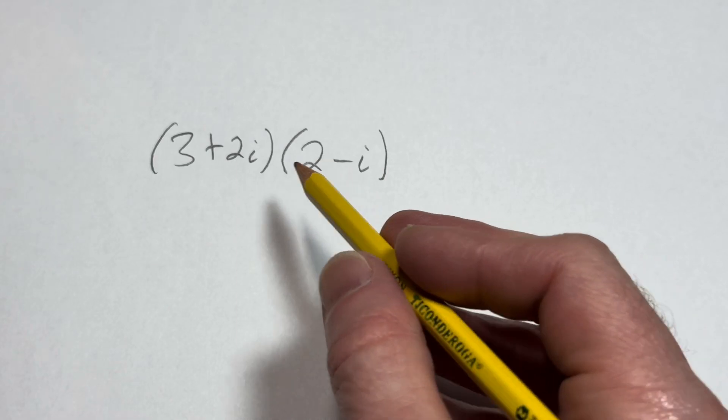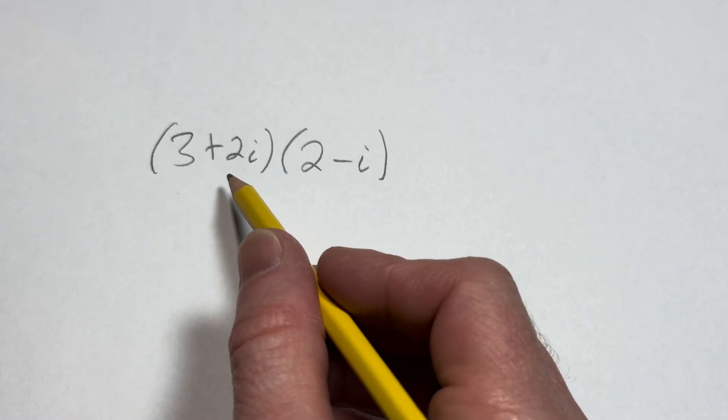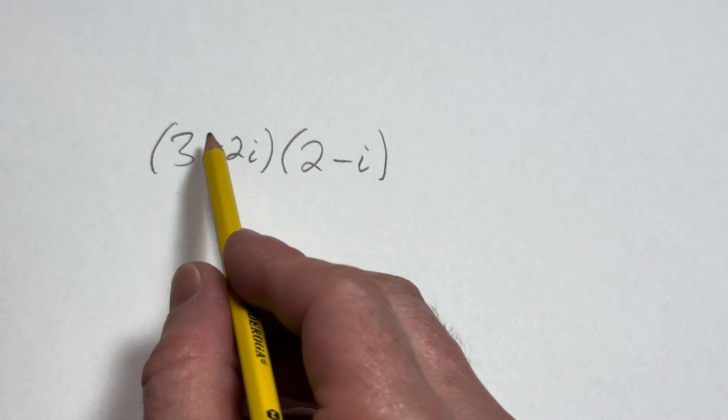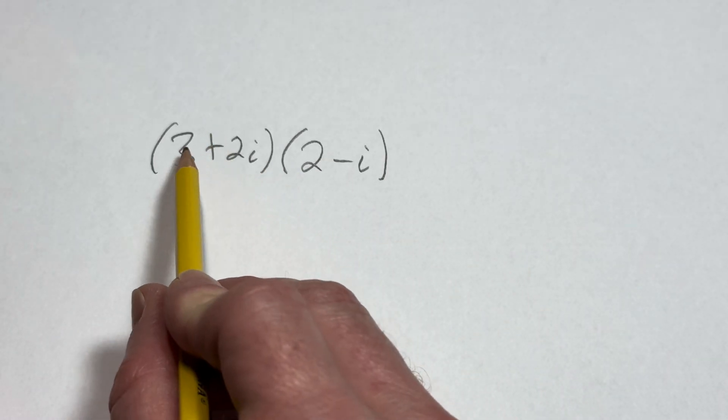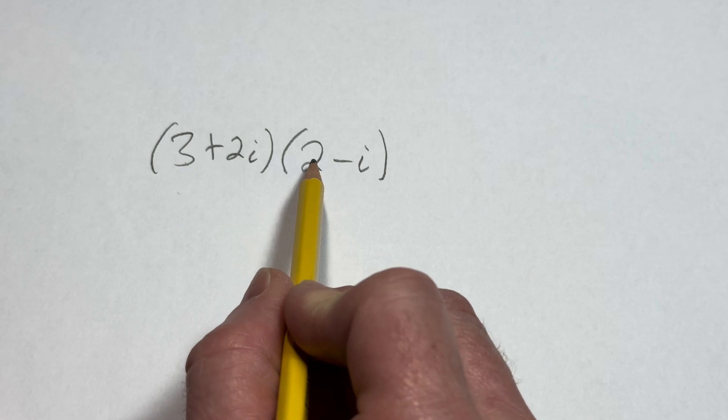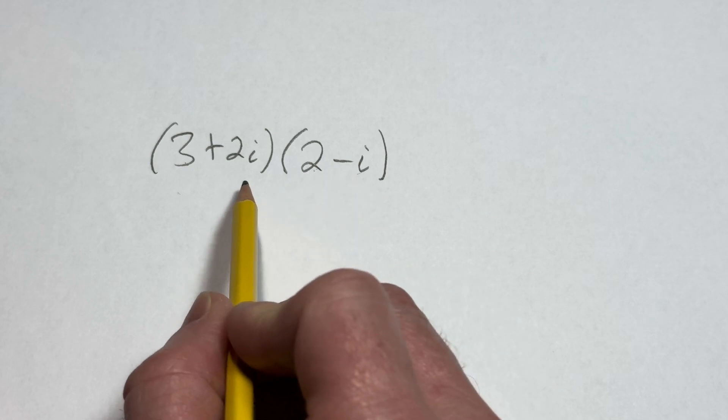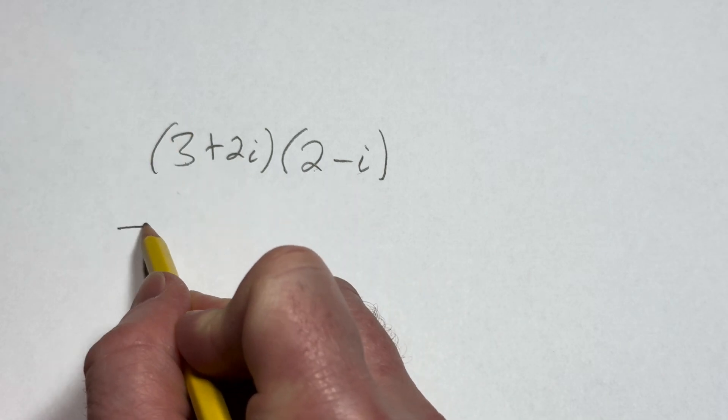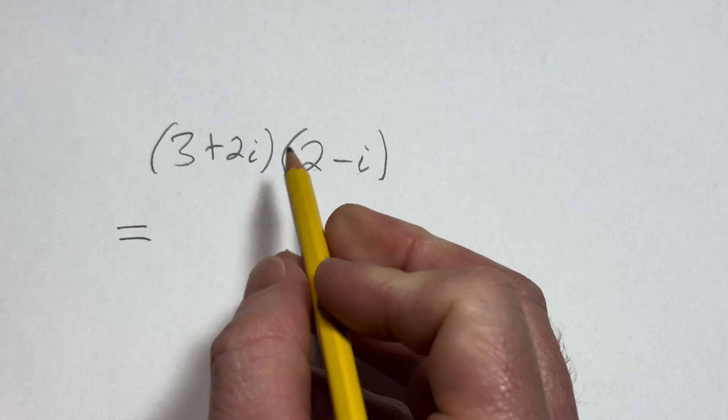Hi, in this video we are going to multiply these complex numbers. We have 3 plus 2i times 2 minus i. Let's go ahead and work through it.